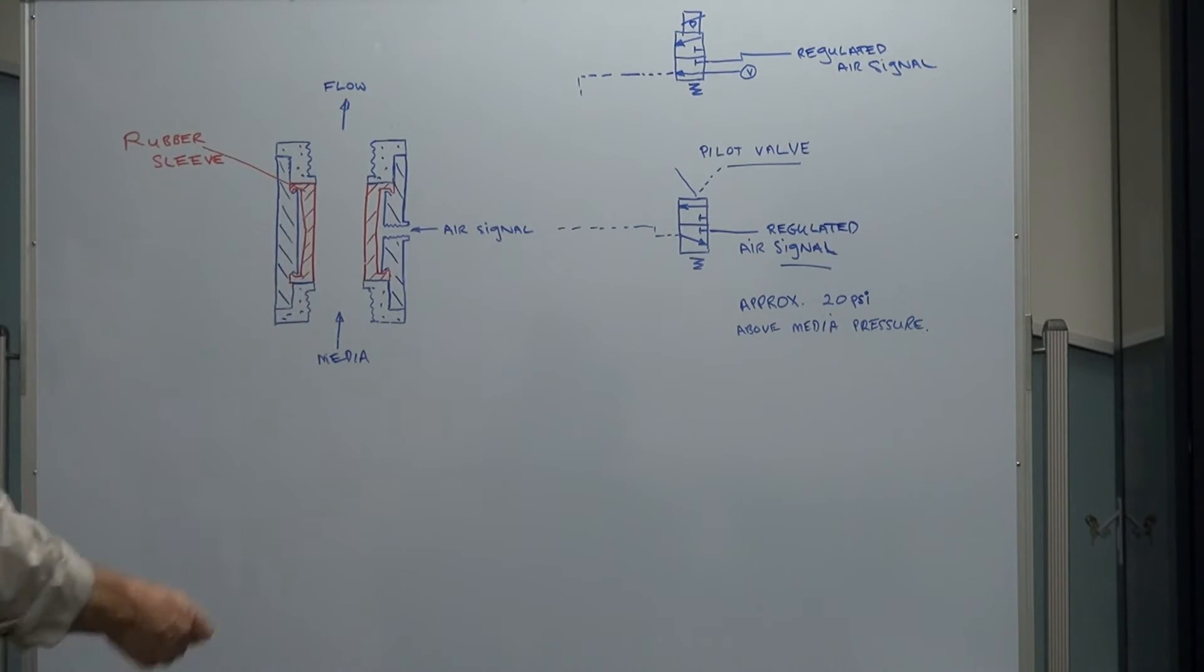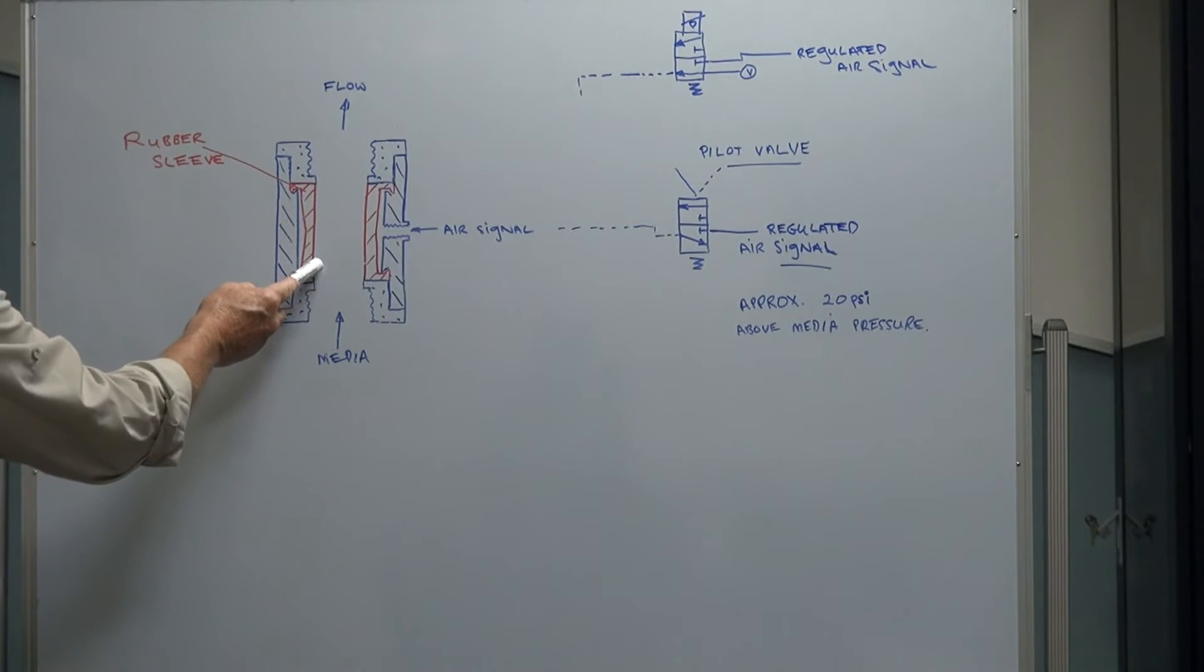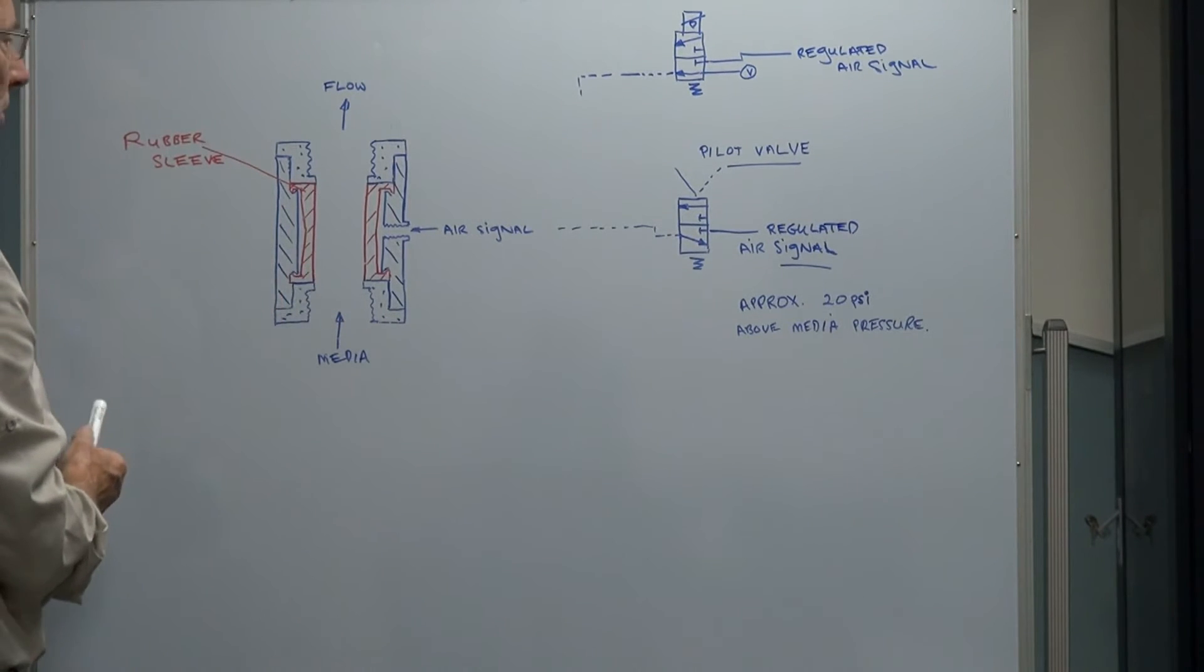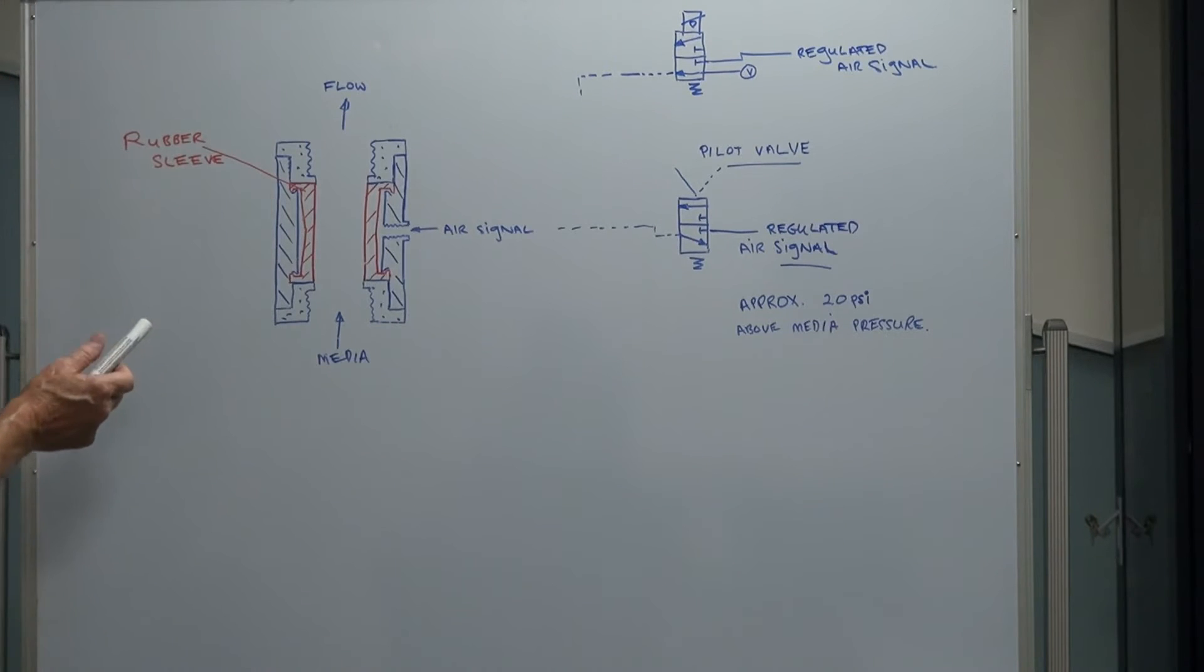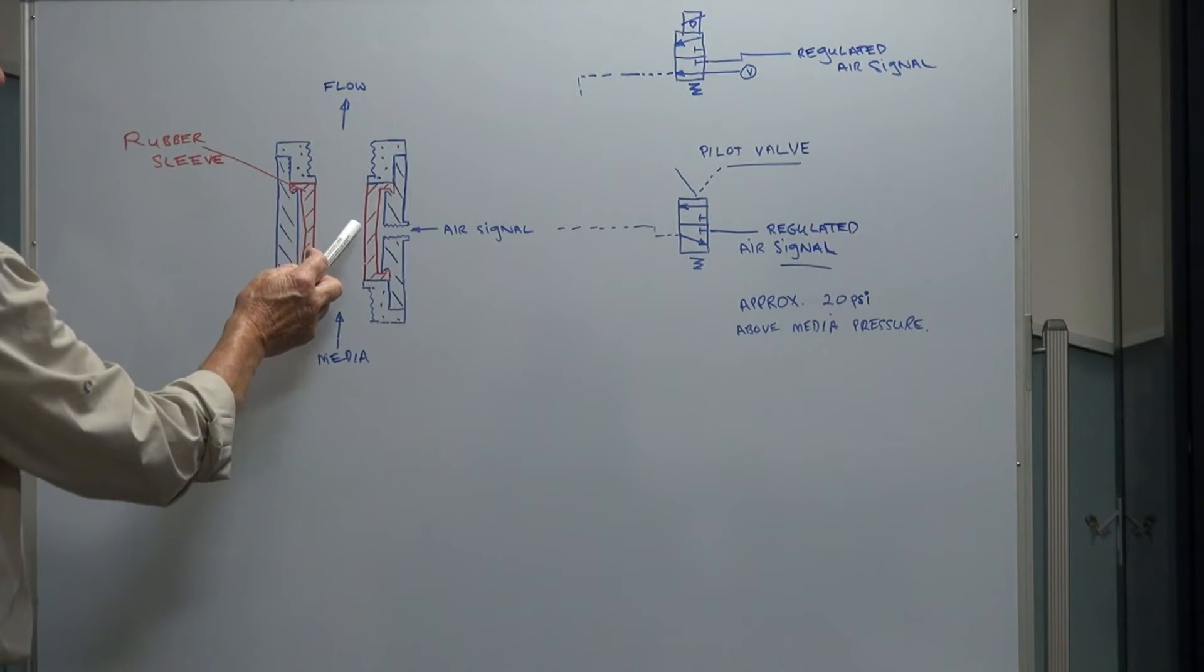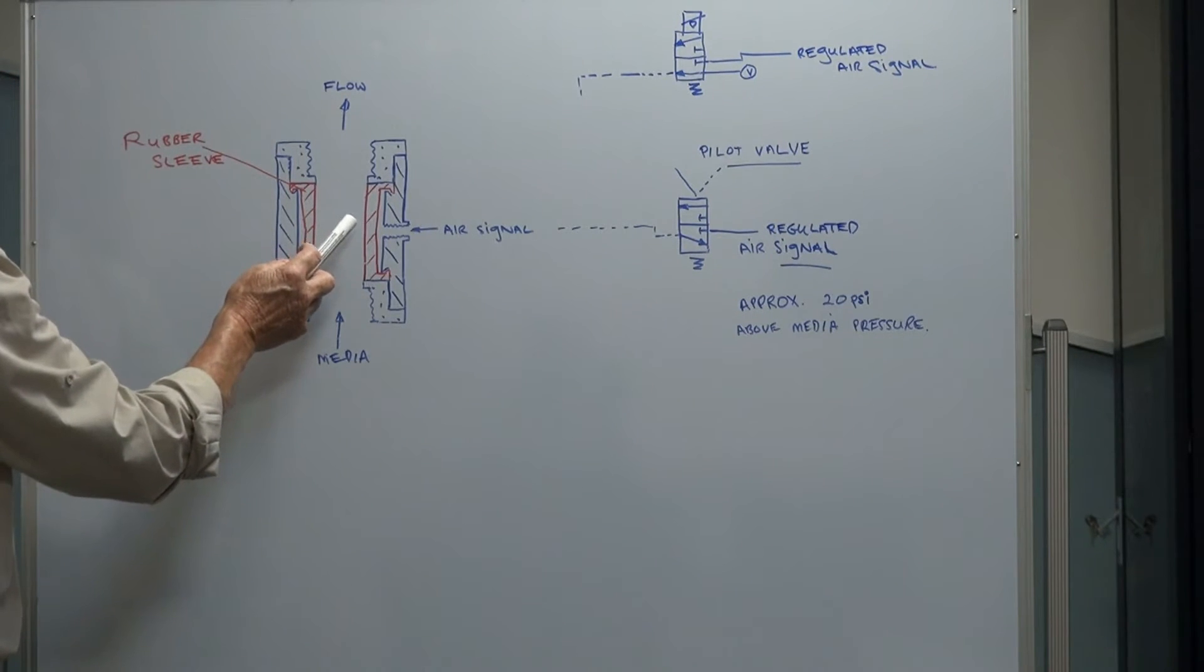The signal here has to be at least 20 psi or about 1.3 bar higher than the media pressure to squeeze it closed. So if you've got one bar of media pressure, you need approximately 2.5 bar of air signal to close the valve. It's a good idea only to put the minimum signal on top of the media pressure to keep it closed.